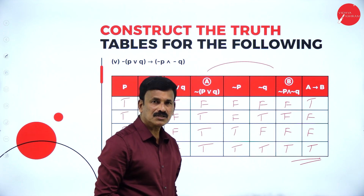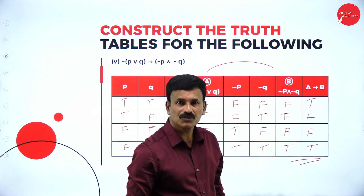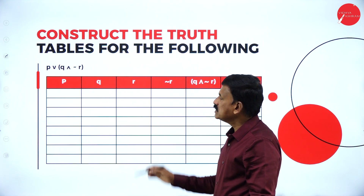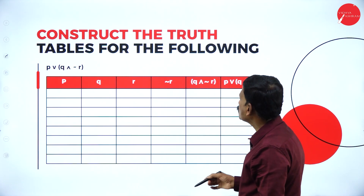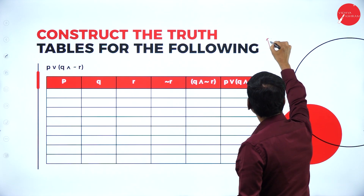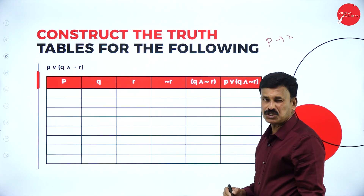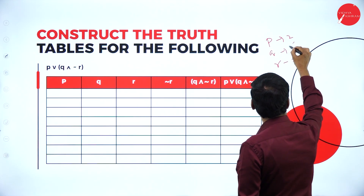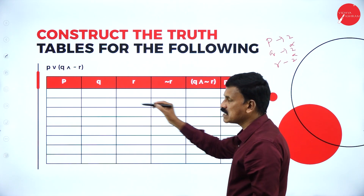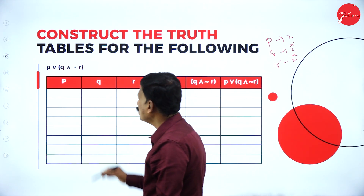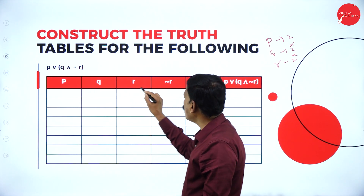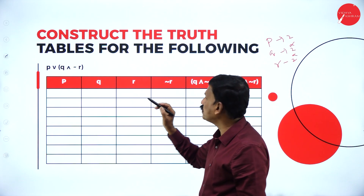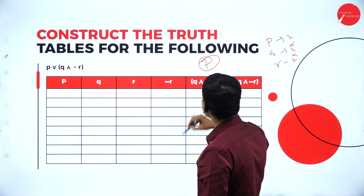This is also an example for neither tautology nor a contradiction. Now the next problem is P disjunction Q conjunction negation R. Here P, Q, and R are given, so for P you will have 2 truth values true and false. Totally 2×2×2 = 8 sets of values. Split as: P, Q, R, negation R, Q conjunction negation R, P disjunction Q conjunction R. These are important problems for 7 or 8 marks questions.